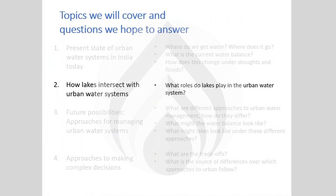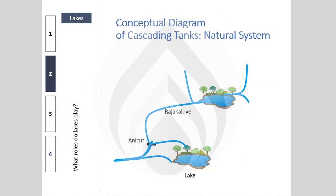This brings us to the second topic: how lakes intersect with the urban water system. An aquifer is the rock or sandy material below the ground that holds groundwater — fractures in rocks hold water in places like Karnataka, while sandy alluvial material holds it in places like Punjab and the Gangetic Plains. These water-bearing layers in the subsurface are called aquifers.